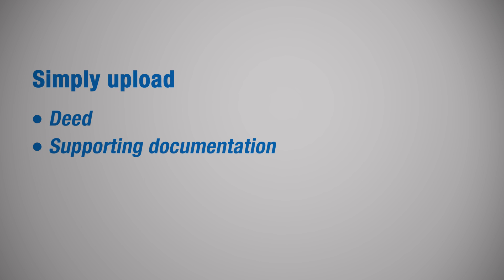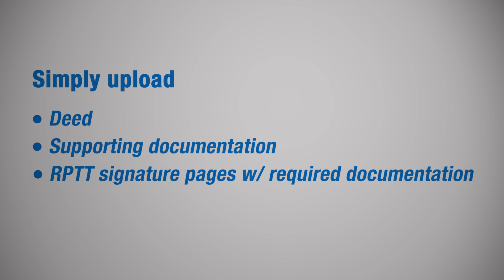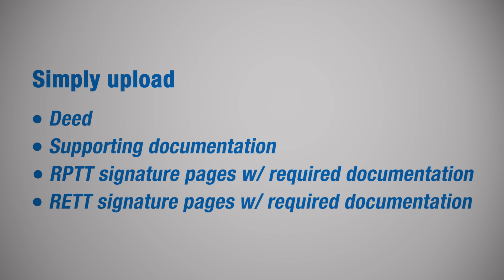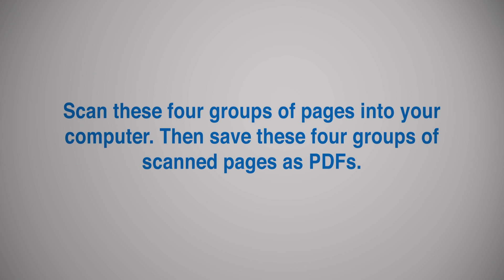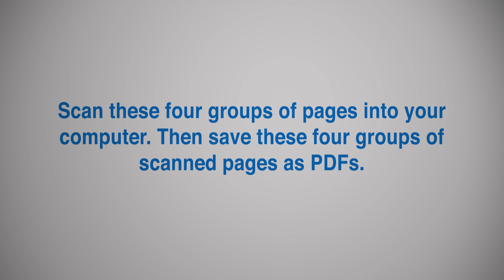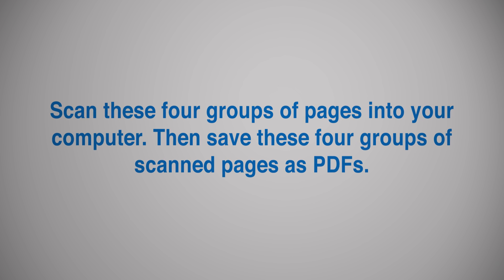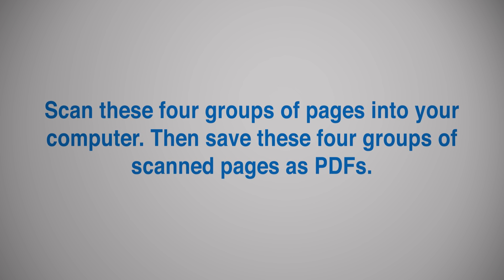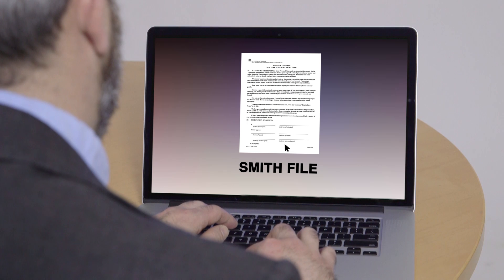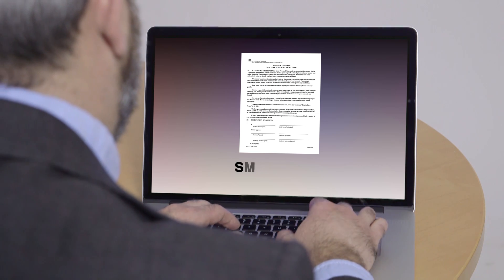Then simply upload the deed, supporting documentation, the RPTT signature pages with required documentation, and the RETT signature pages with required documentation. Scan these four groups of pages into your computer, then save them as PDFs. We recommend that you label the PDFs clearly so you'll know exactly which document it is. For example, if it is the Smith file, label it Smith Deed. This way, once you create the cover page, you'll know that you're looking for the Smith Deed.